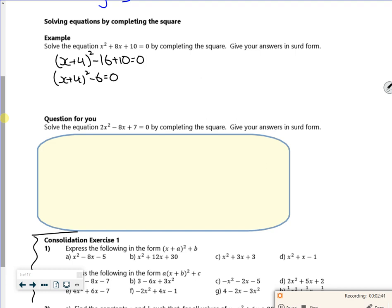Now people forget about this, the whole quadratic formula comes from completing the square. So if I just rearrange this, I'd have x plus 4 squared equals 6.